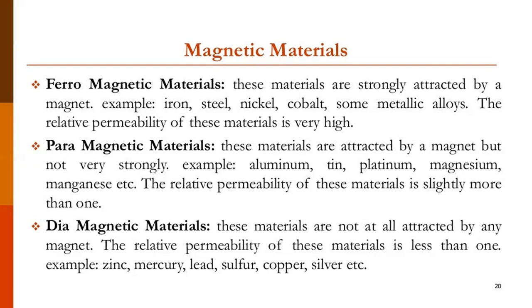The next type of magnetic material is paramagnetic material. These materials are attracted by a magnet, but not very strongly. They are also attracted, but the force of attraction is not as strong as compared to ferromagnetic materials. Examples are aluminum, tin, platinum, magnesium, manganese, etc. The relative permeability of these materials is slightly more than one.